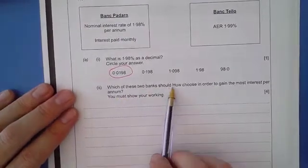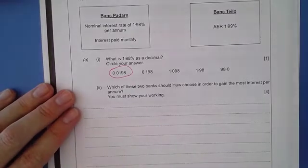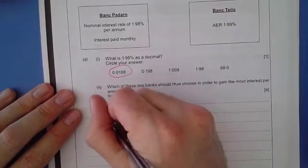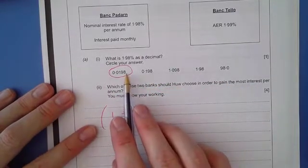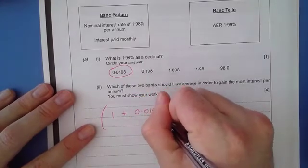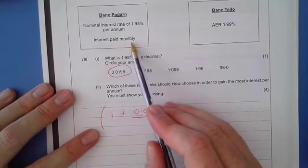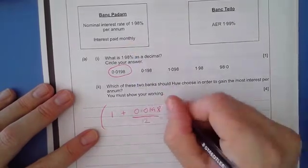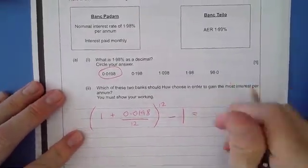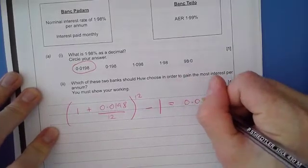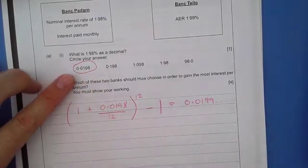It then says, which of these two banks should you choose in order to gain the most interest? You need to turn to the second page. The AER formula is given to you there, and it will tell you that it is 1 plus I for interest, but it must be written as a decimal. So that would be 0.0198 divided by N, where N is the number of periods of interest going into a year. So monthly into a year, how many months are in a year? 12. That divided by a number there will be the same power number there, and then it will say take away 1. Now that answer comes to 0.0199.